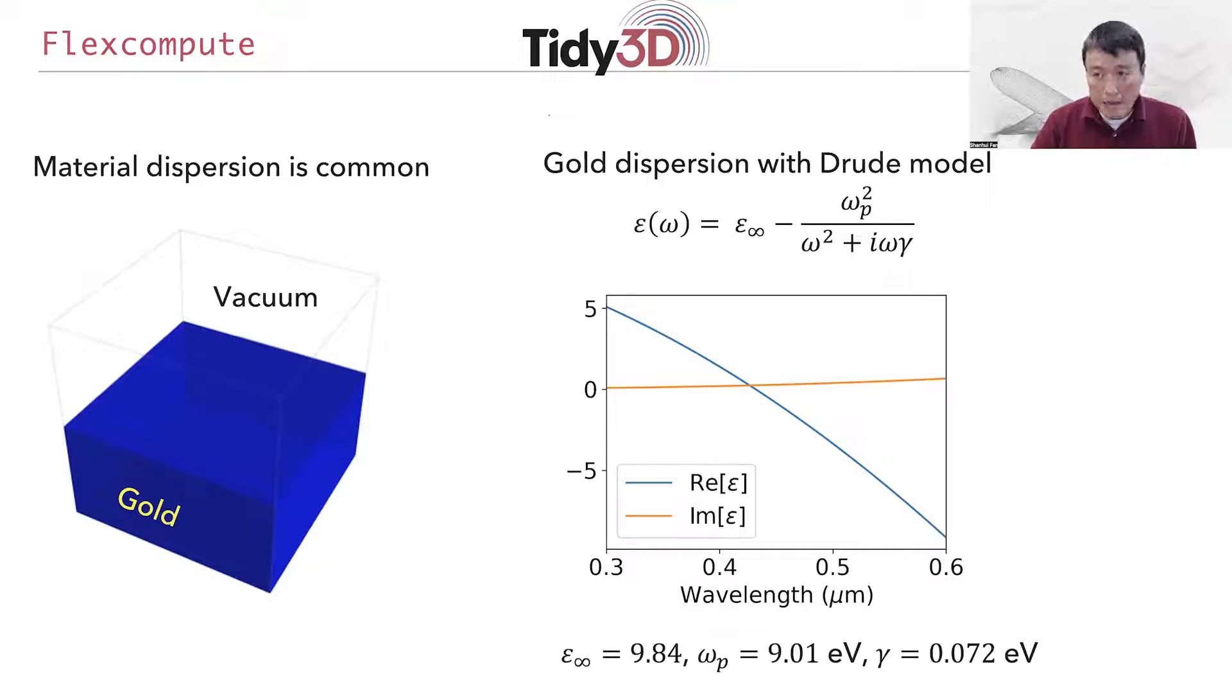One common example of dispersive material is metal in the optical frequency range. For example, if we consider gold, it turns out that its dielectric permittivity can be very well described by this Drude model that shows the dependency of the permittivity as a function of frequency. You can see, for example, that the real part of the permittivity actually varies from being positive to being negative in the wavelength range across the visible frequency spectrum.